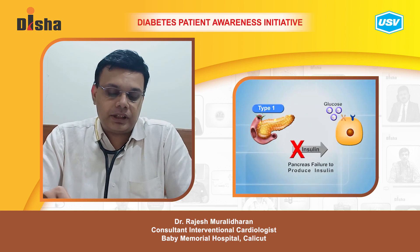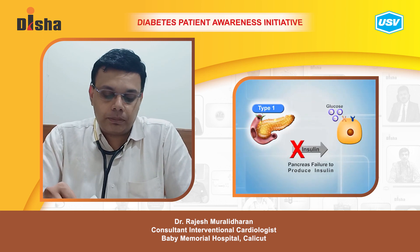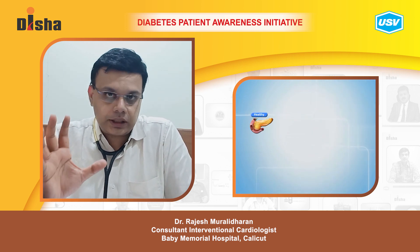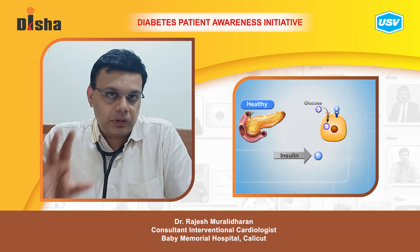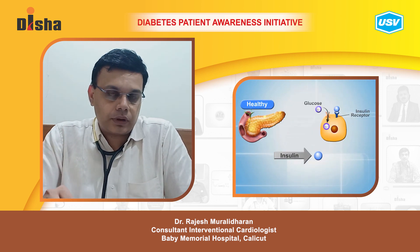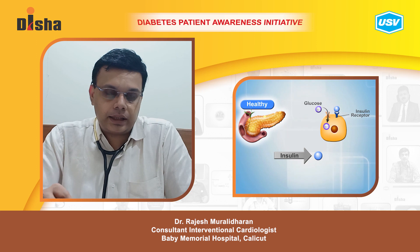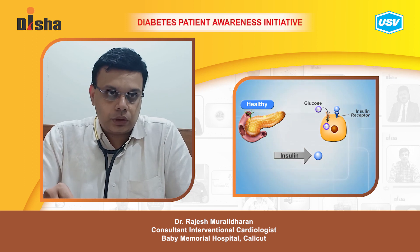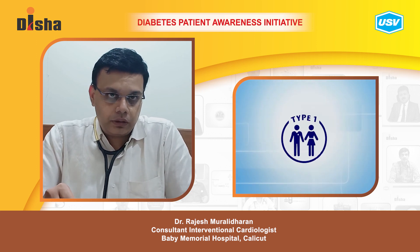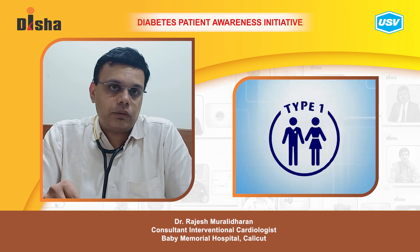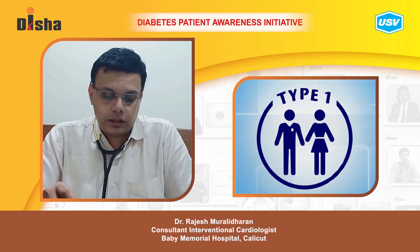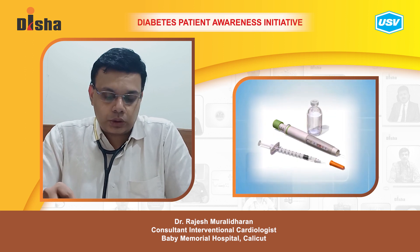In type 1 diabetes, the body completely stops producing any insulin. Insulin is a hormone secreted from the pancreas that helps in the metabolism of glucose. People who have type 1 diabetes have a total deficiency of insulin and should take insulin injections to survive.